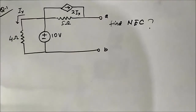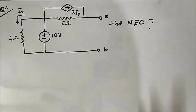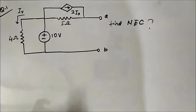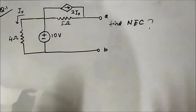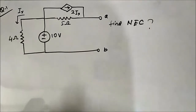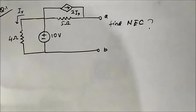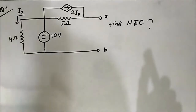Hello friends, welcome to engineering tutorial. We'll continue our discussion with network theorems. So far we have discussed the basic application of Norton's theorem to circuits involving independent sources — around six or seven questions — and also the interconversion between Norton and Thevenin theorem. In the next series of questions we'll be discussing application of Norton's theorem to circuits involving dependent sources.